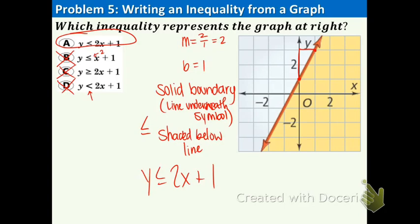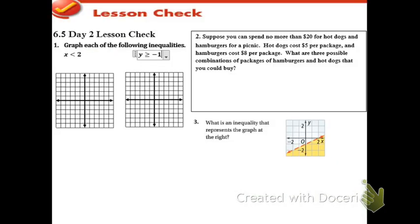To determine the correct side of the boundary line to shade when graphing an inequality, you can substitute a test point into the inequality — just like we've done before by plugging in numbers. Typically (0, 0) is the easiest point to plug in, so that's what I recommend. That completes this lesson. Feel free to try the lesson check for today. Please complete the 6.5 day one lesson check — I will be checking for that when I check your notes.